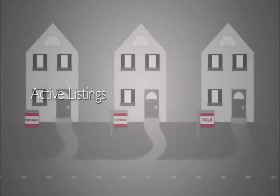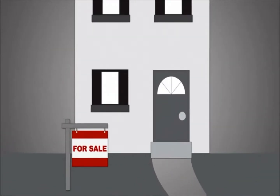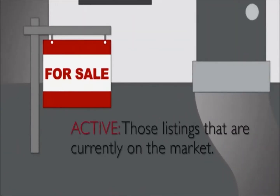Active listings are listings that are currently on the market. Some sellers make the mistake of looking strictly at active listings as a basis for setting their list price. The problem with this strategy is that the only thing we know about active listings is that they have not sold. So while knowing what our competition is selling is part of the puzzle, it's not the only piece.